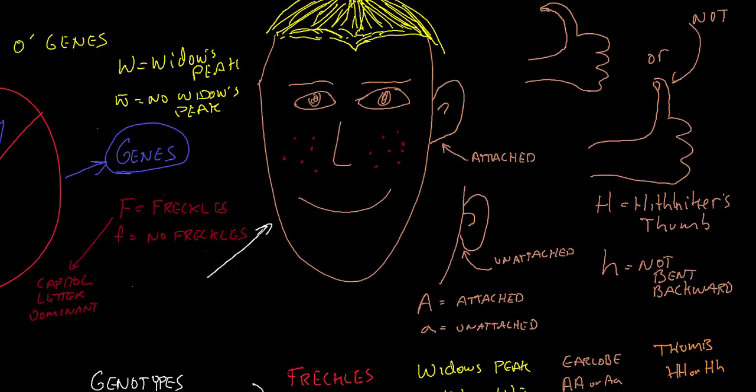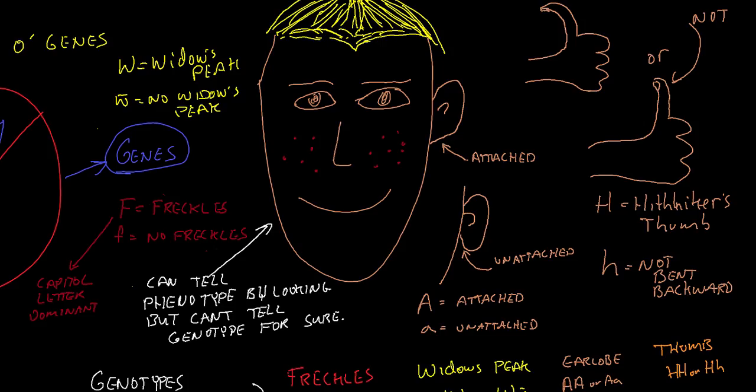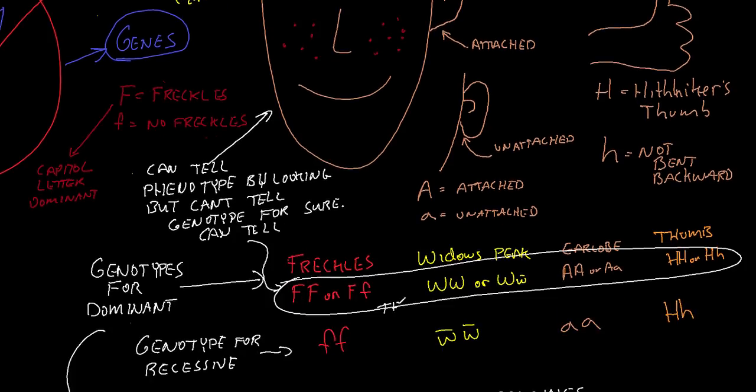Now, by looking at a person, you can tell that they have the dominant, but you can't tell what their genotype is for sure. But we can tell that they have at least one dominant for these things.